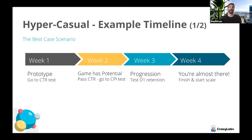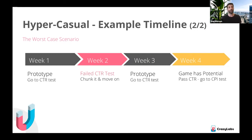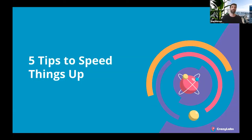If you meet the KPIs, you simply start scaling the game to reach the top charts. The overall best-case scenario is about four weeks until your game reaches the top chart. In the worst case, you've invested one week or less in creating a CTR prototype — just a gameplay video — and if it fails, you cut and move to the next prototype. You save a lot of time and resources and very quickly understand the KPIs.